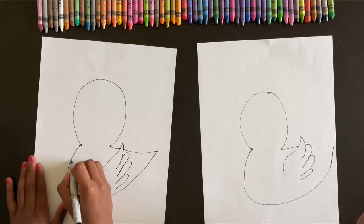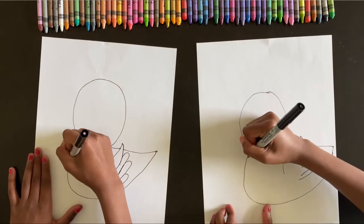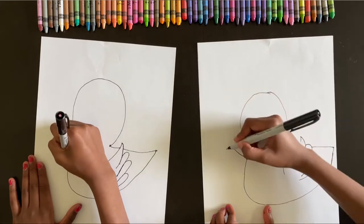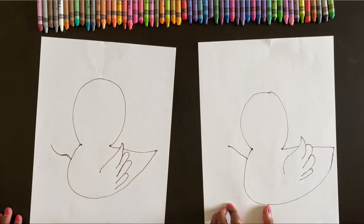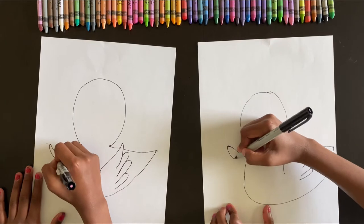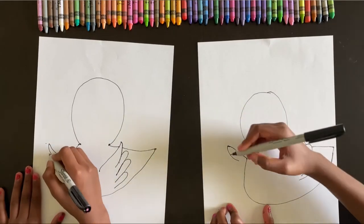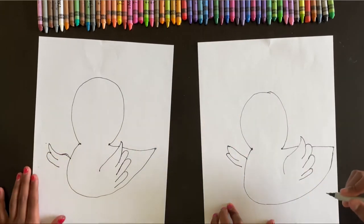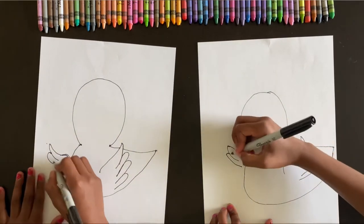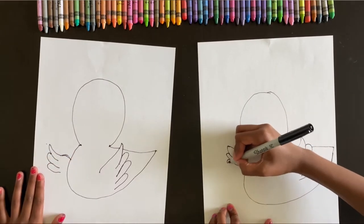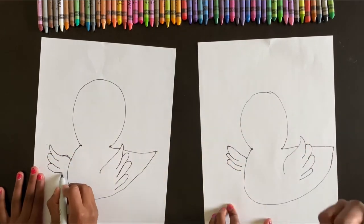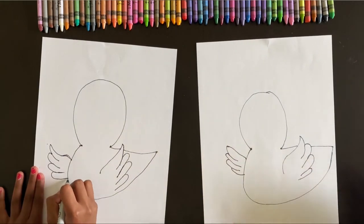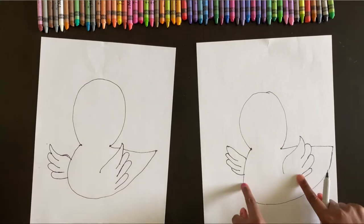And now this side we can draw the other hand. Start here and go across like this. And go down again. And another one. Do another one past that line. And now draw another one. A bit lower. And then the last one connecting it like this. Now we have both of the chick's wings.